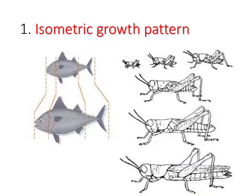This is the diagram to illustrate the isometric growth pattern. In fish, the increase in size does not accompany a change in shape because the organs of the body follow the same rate as the whole body. And in the grasshopper, there is also no change in shape as it grows, but the wings and the genitalia grow separately from other organs.